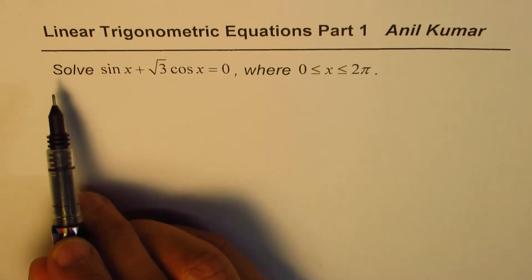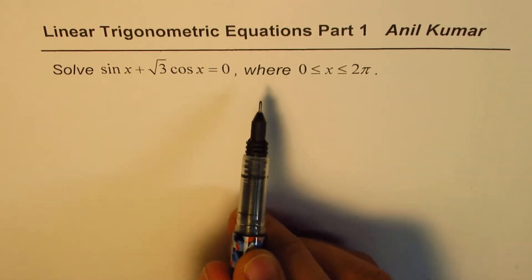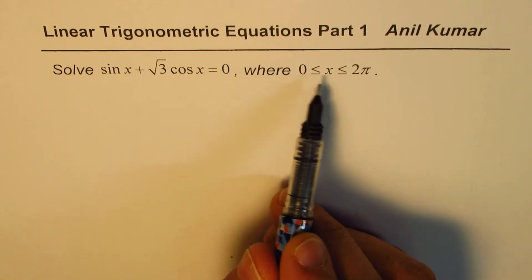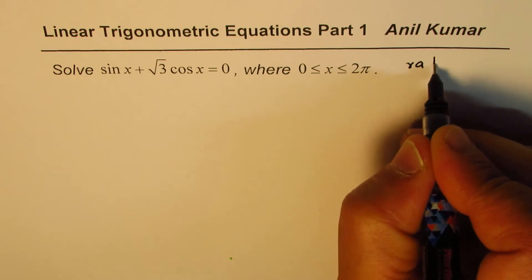The question here is: solve sin x plus square root 3 cos x equals 0, where x is between 0 and 2π. So we expect the solution to be in radians.